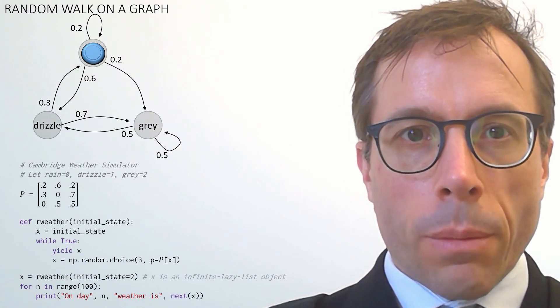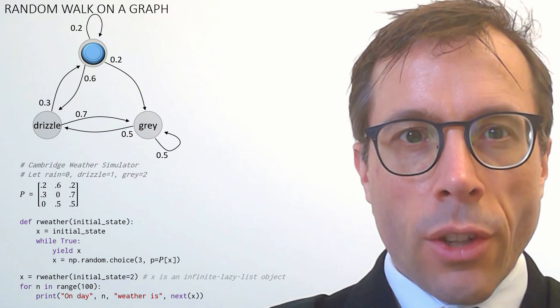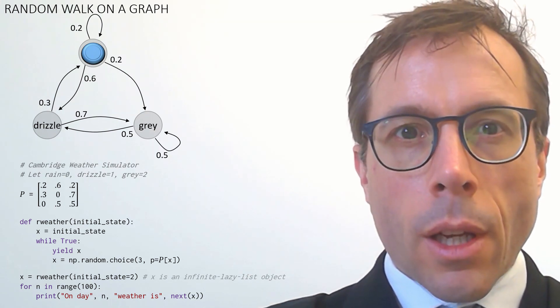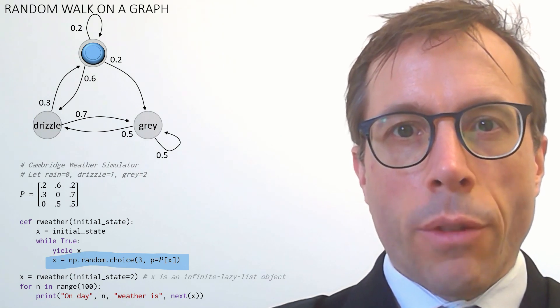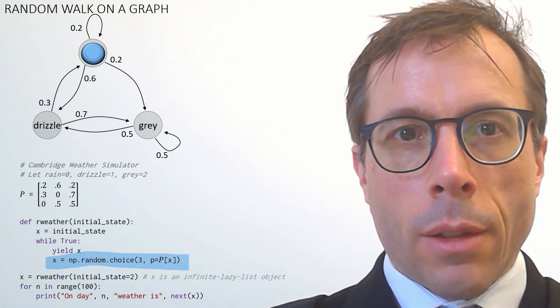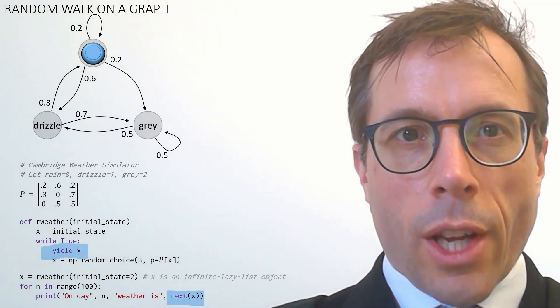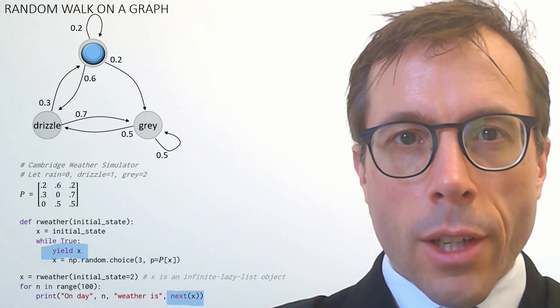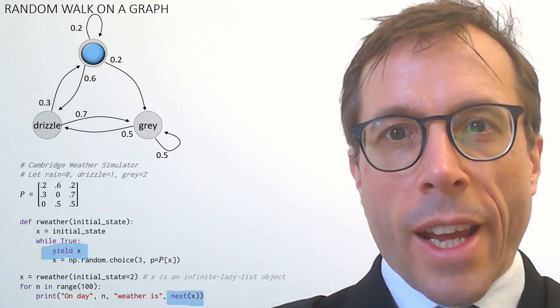In code, it's very simple. We first set up a matrix of transition probabilities, call it P, and then each day, we just pick the next state randomly by looking up the appropriate row of the P matrix. I've written this code using Python's yield syntax, which is Python's way of creating an infinite lazy list. To pull the next item in the list, you call next on it.